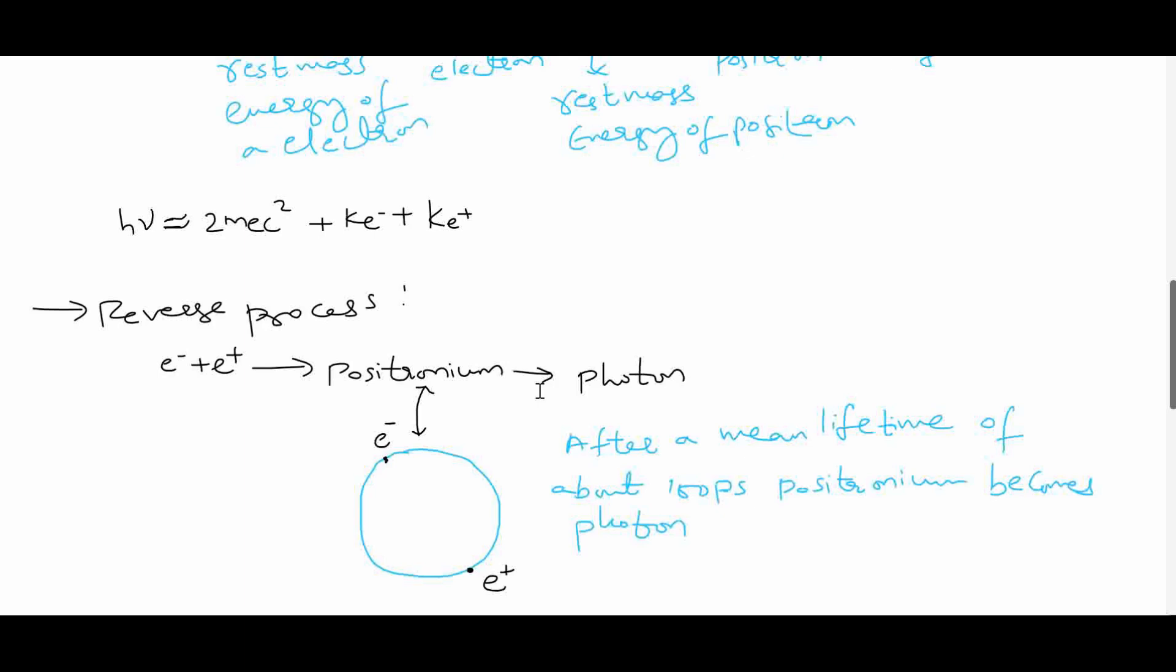Ultimately, this positronium will transform into photon after a mean lifetime of about 100 picoseconds. In the case of producing electron and positron from photon, we need a nucleus, but here we do not have anything in the environment, so just an electron and positron if collided ultimately become photon. 100 picoseconds is very less time. That's why we do not find positrons in nature.